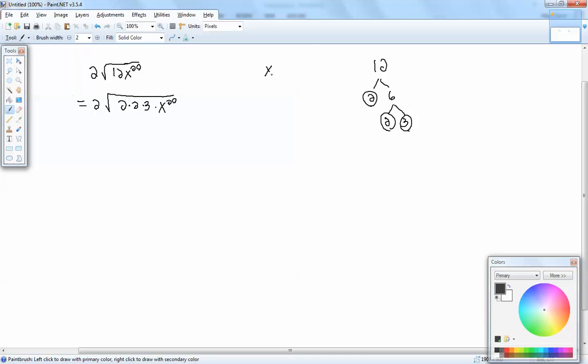Now let's figure out how many x's to bring out. We're going to take our power, which is the 20, divided by the index, and we're talking about square roots, the index is always 2. So 20 divided by 2 is 10 with a remainder of 0. This is going to be how many is going to come out, this is going to be how many is going to stay in.